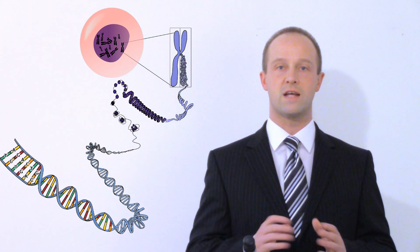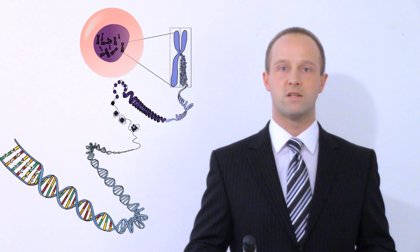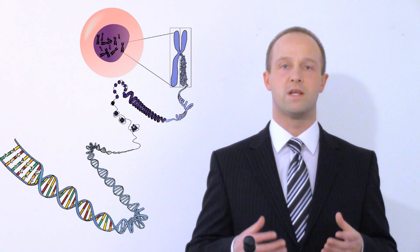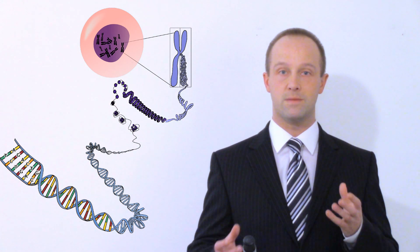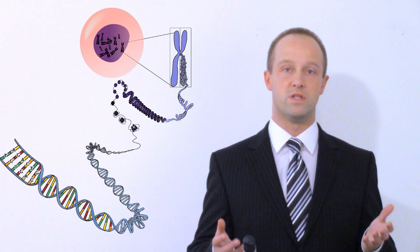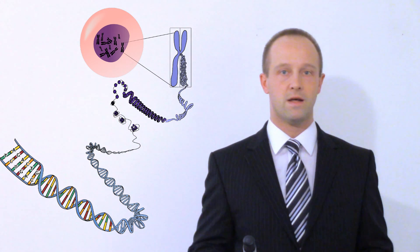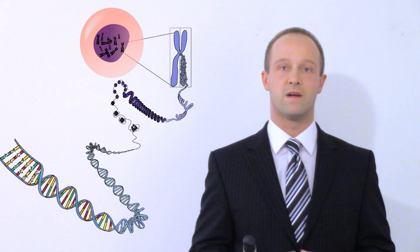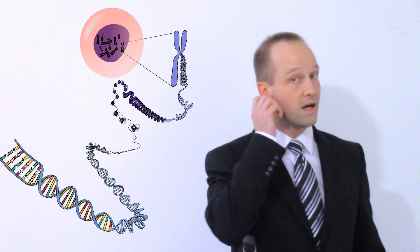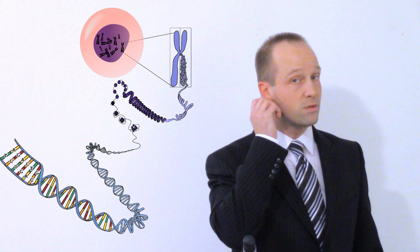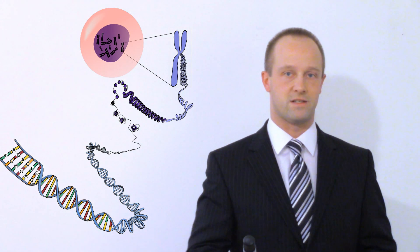Individual sections of this DNA are known as genes — that is a section which controls one particular characteristic. And different types of genes are known as alleles. For example, the genes which control whether or not you have an earlobe: one type of allele may cause you to have attached earlobes, and the other type may cause you to have unattached earlobes.